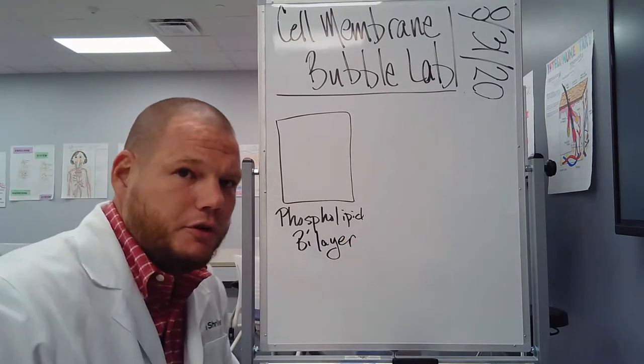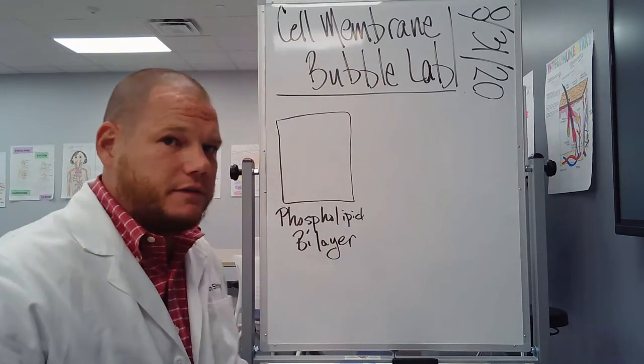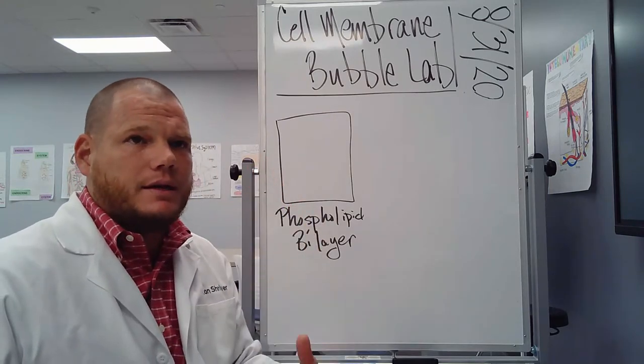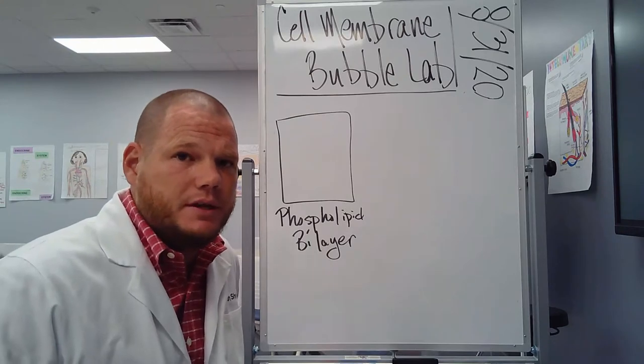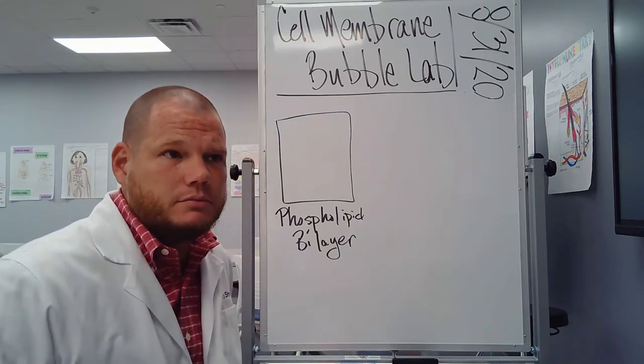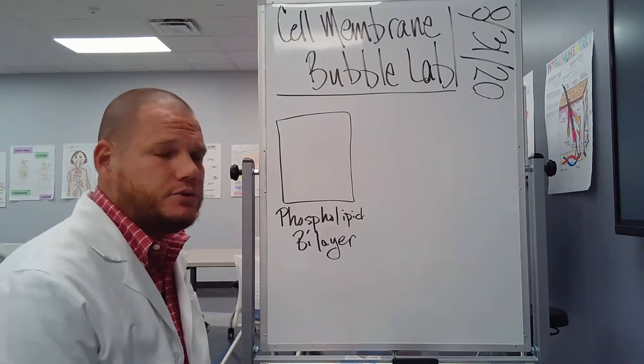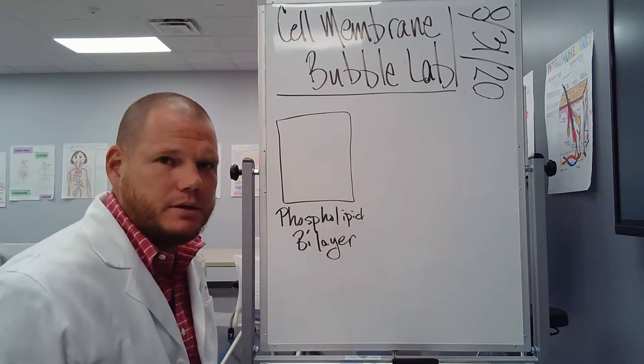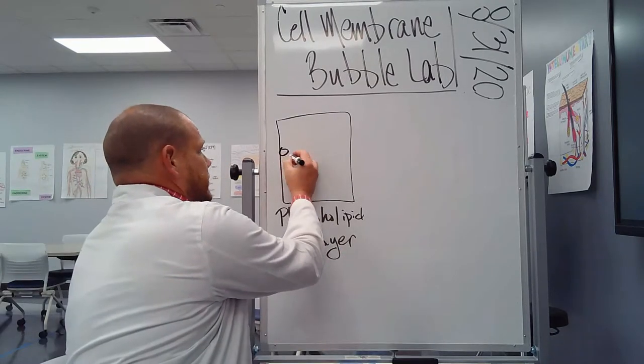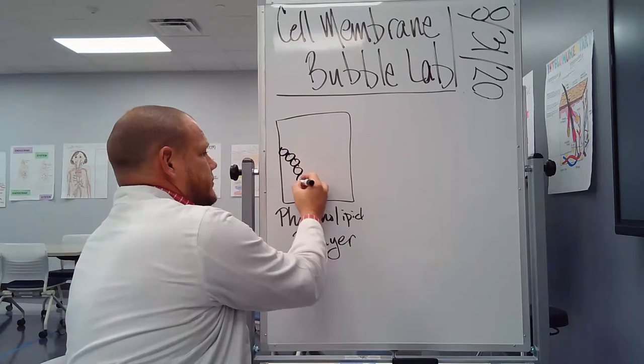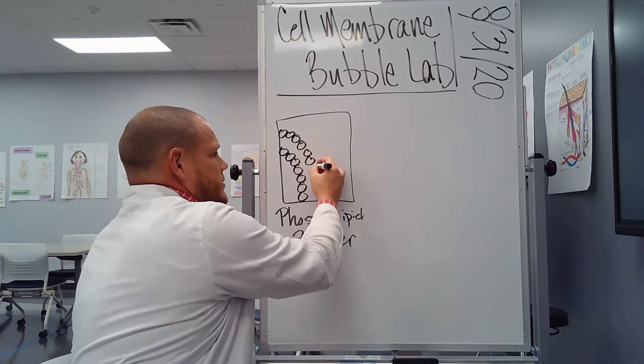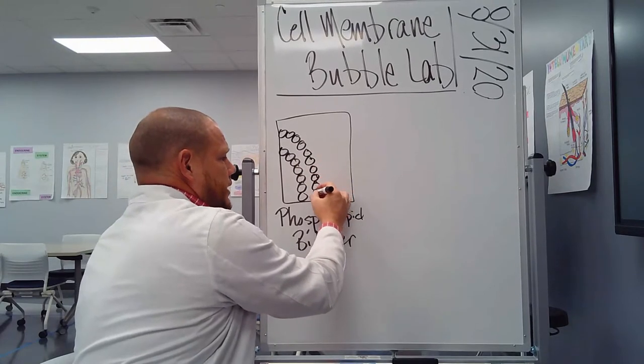Now you probably remember from your foam model activities that we did over the phospholipid that the phospholipids have two parts. It has a phosphate head that is attracted to water. It's hydrophilic and you have the lipid tail that is hydrophobic or repelled by water. So if we draw just a little segment of a simple model, a simple sketch of the cell membrane, it might look something like this. We've got our phosphate heads. Remember it's a bilayer. Two layers that make up the membrane.